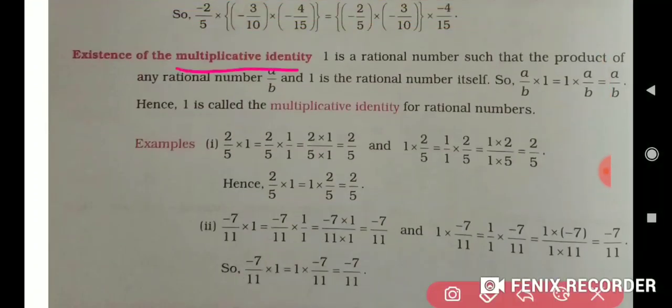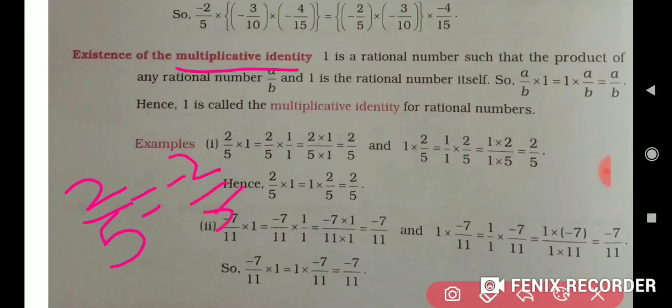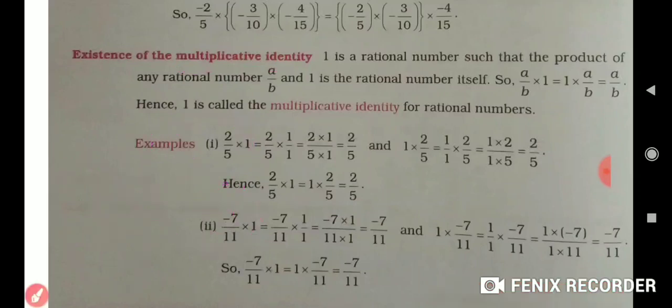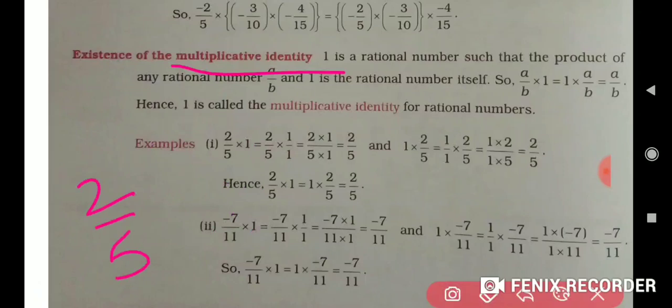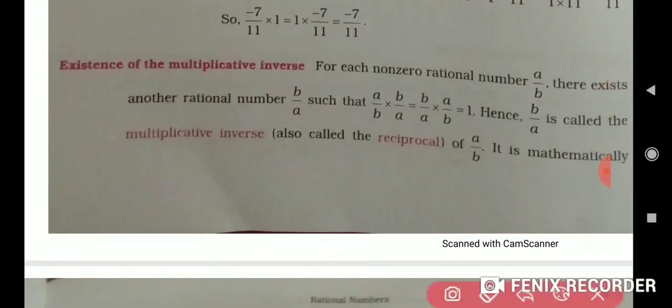Multiplicative inverse: as you know, I previously taught additive inverse, which means the sign is changed — for example, the additive inverse of 2/5 is −2/5. Multiplicative inverse means the reciprocal of that number. For example, the multiplicative inverse of 2/5 is 1 ÷ (2/5) = 5/2. That's all — multiplicative inverse is just the reciprocal.